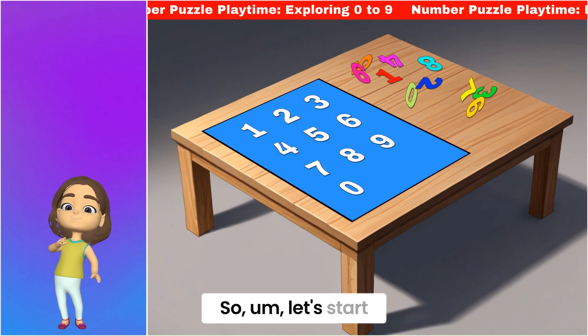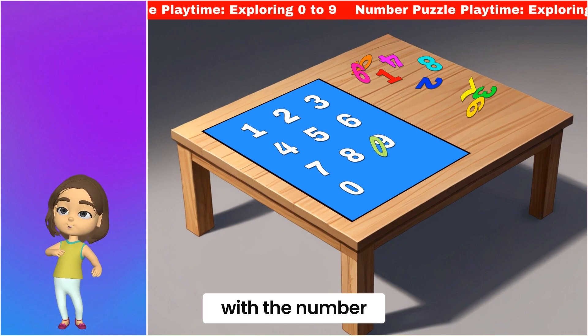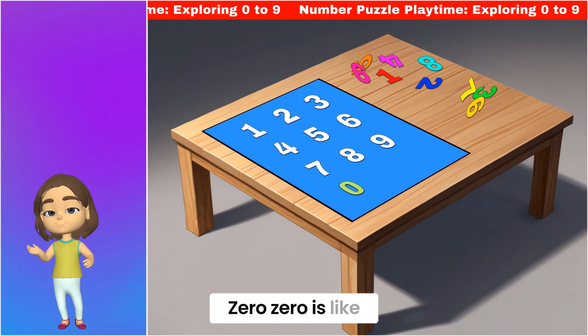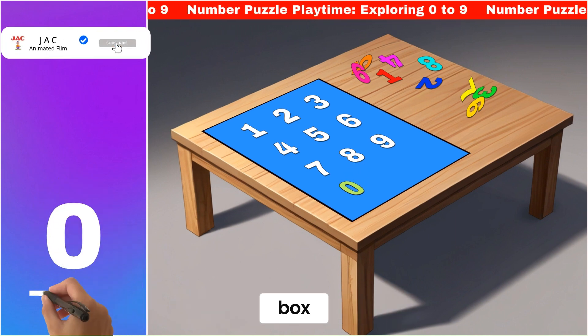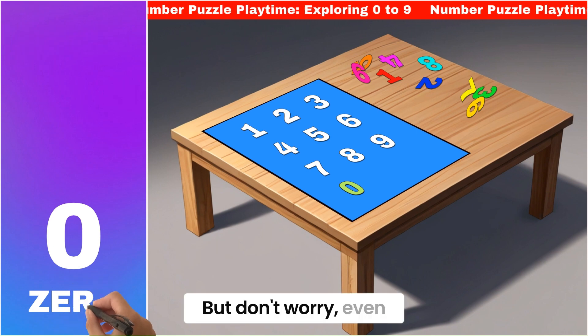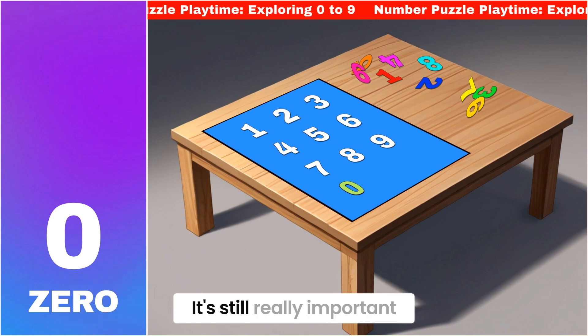So, let's start with the number zero. Zero is like when there's nothing at all. It's like an empty box. But don't worry, even though it's empty, it's still really important.